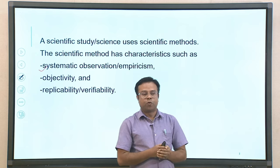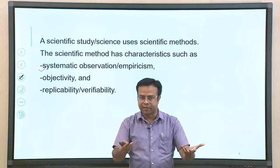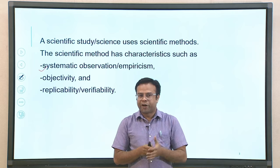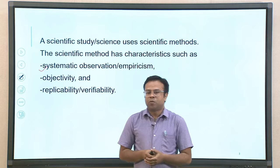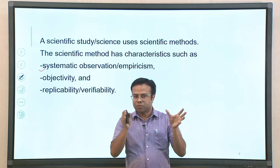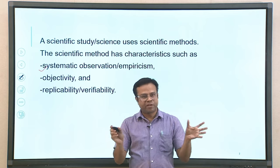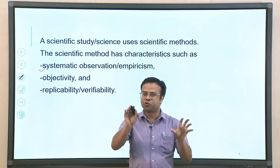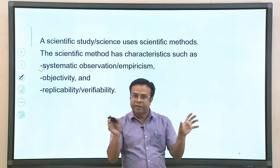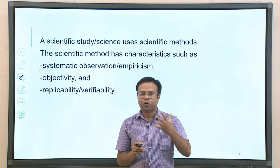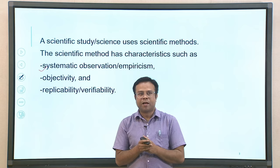One of the basic characteristics of science is that it uses systematic observation. Science will study only those phenomena which can be observed or detected using our sense organs — hearing, seeing, touching, tasting, smelling, and so on. Science does not only use any observation; it uses systematic observation. We can observe something randomly or we can observe something systematically, and there is a difference between these two.